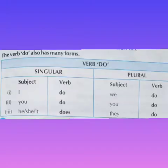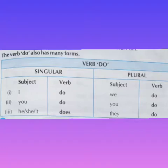The verb 'do' also has many forms. With 'I' and 'you' we use 'do.' With 'he,' 'she,' or 'it' we use 'does' — D-O-E-S. With plural subjects like 'we,' 'you,' 'they' and any plural nouns, we use 'do.' So with singular subjects we use 'does,' and with plural subjects we use 'do.' With 'I' and 'you' we always use 'do,' not 'does.'